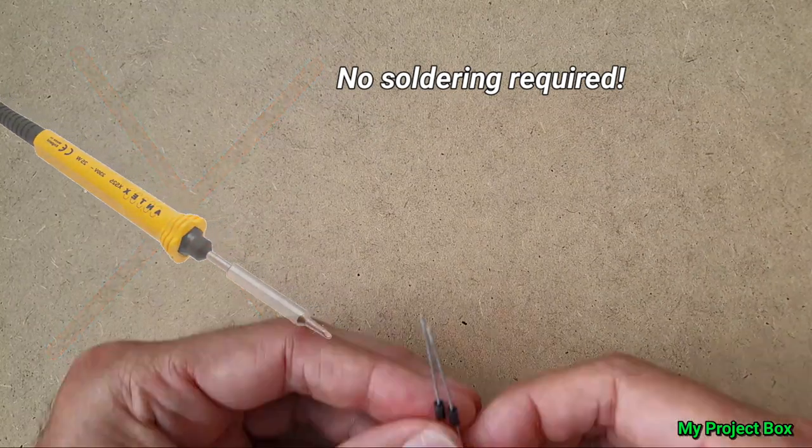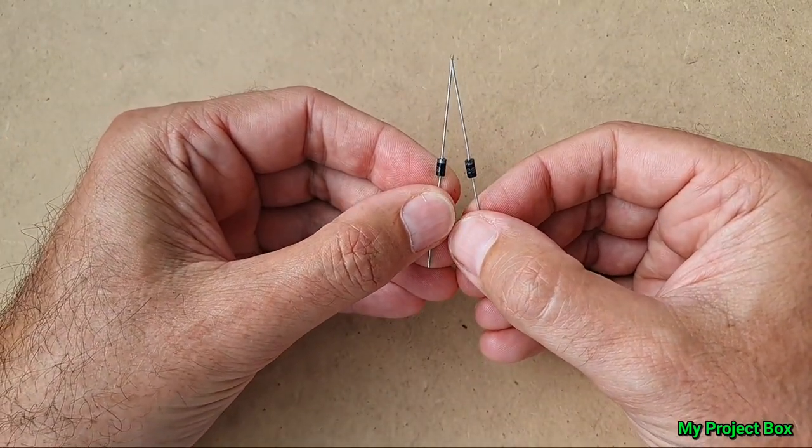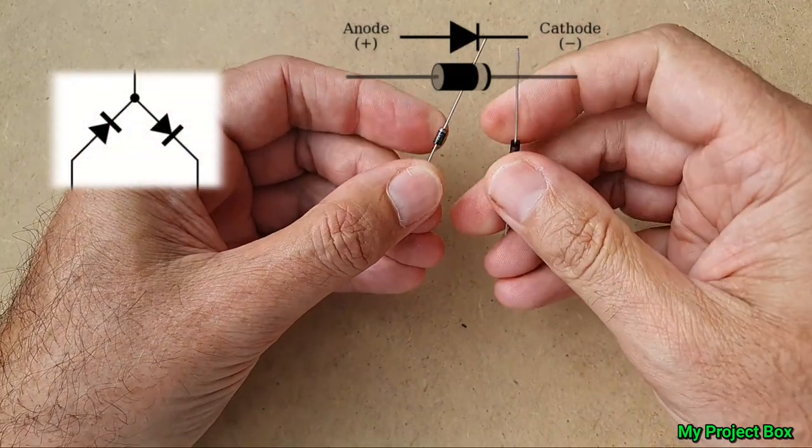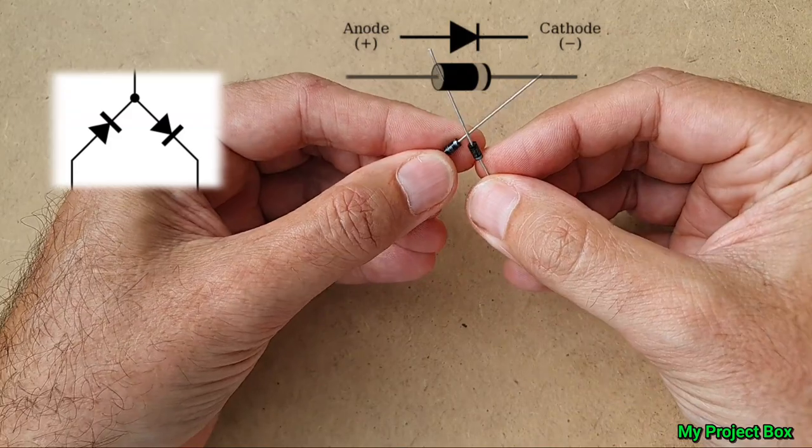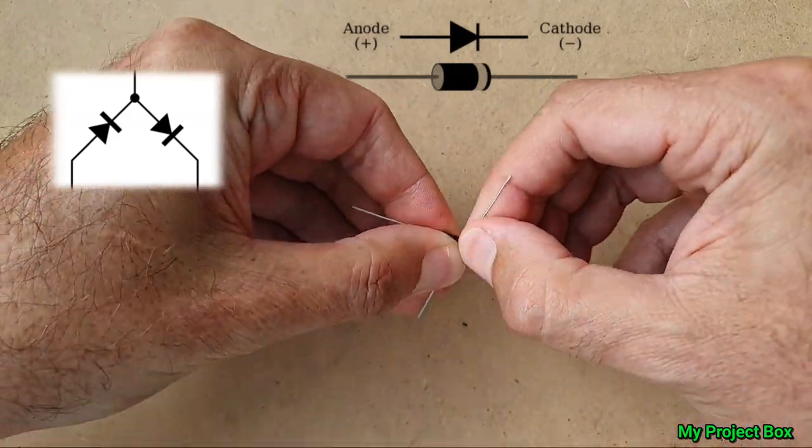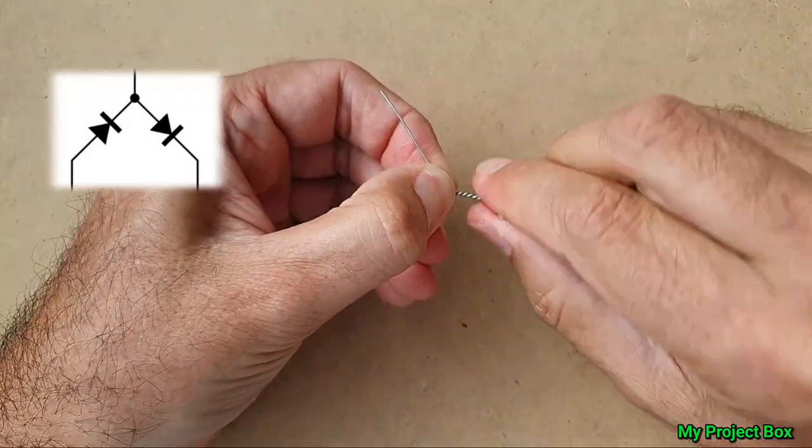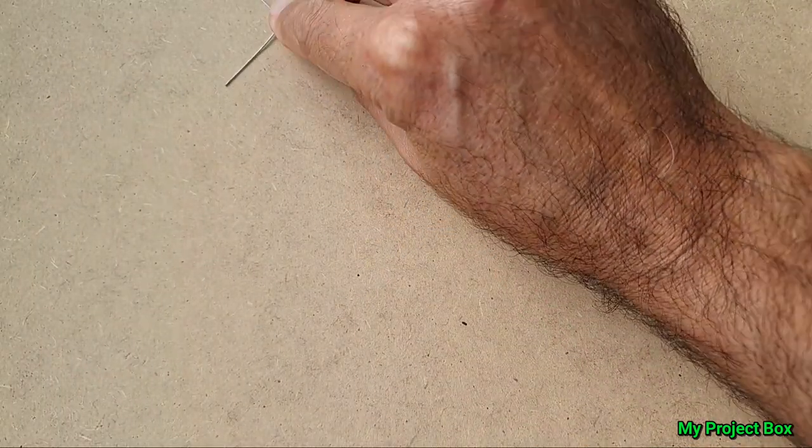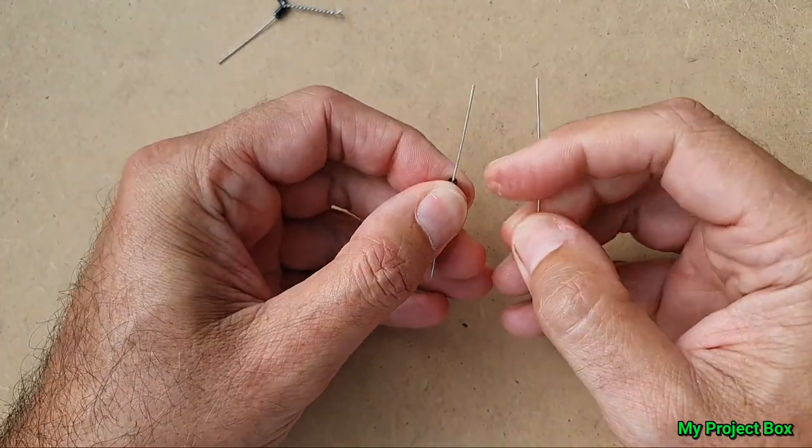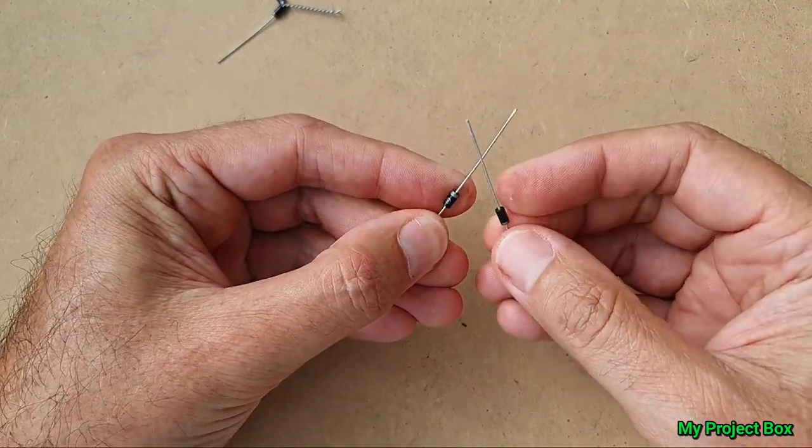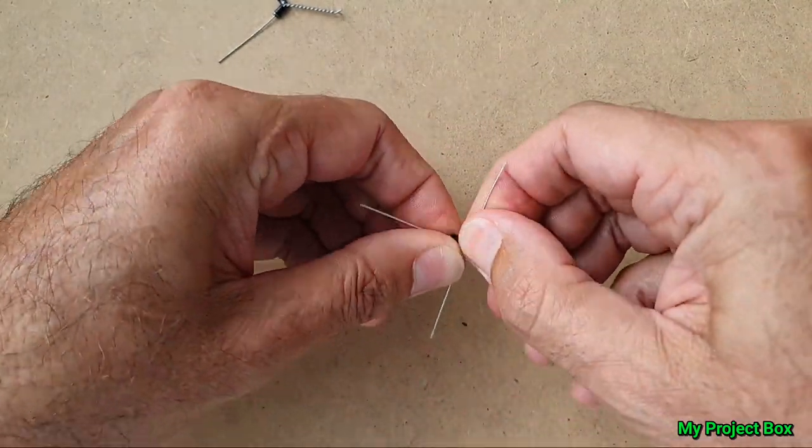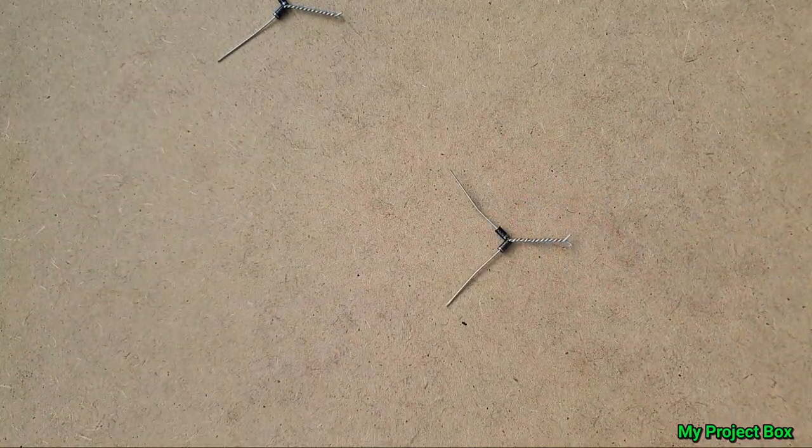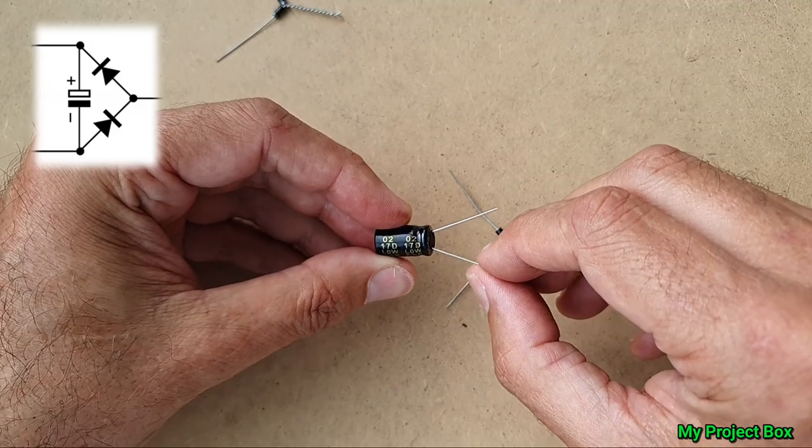So to do our no solder version, what you need to do is take two of these 1N4007 diodes and you put them sort of one facing up and one facing down. So the stripe indicates the direction of the diode and you sort of put them at an angle together like that, and then you just start twisting them together. Put that to the side, and then we do the same thing again, one facing up and one facing down, and we twist them together.